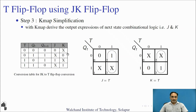Similarly, we map the K column on the K-map: 0x and x1. After grouping minterm 3 with the don't-care case to form a pair, the expression for K is also T. So we have derived J = T and K = T.